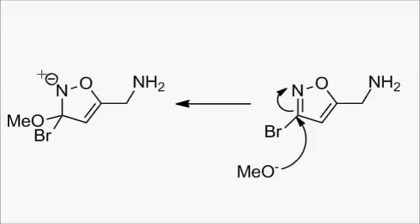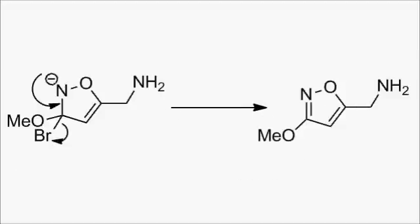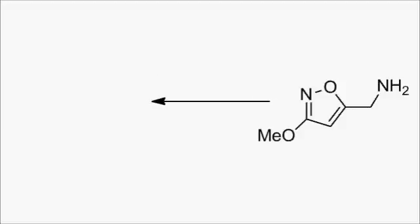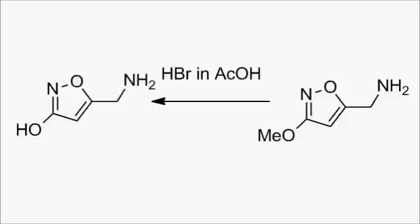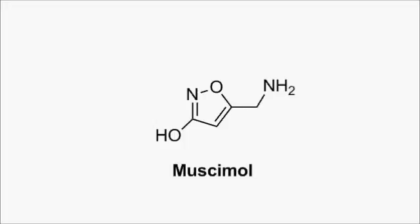A methoxide ion can attack into the ring, and the negative charge is temporarily delocalized on the nitrogen, which pushes away the bromine. Once the methyl ether was installed, it was converted to a hydroxide group by 33% hydrogen bromide in acetic acid. That acid is strong enough to protonate the oxygen, and then a generic nucleophile can come and pick off the methyl group, converting the methyl ether into a bare hydroxide group, which completes the synthesis of muscimol.